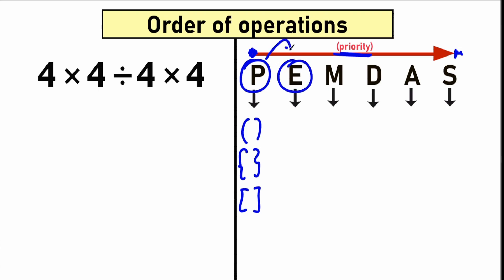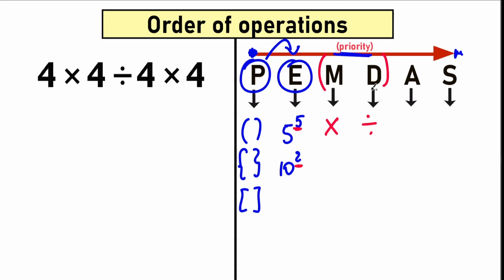After parentheses we move to the next step: exponents. These are basic powers — for example, 5 to the power 5, or 10 to the power 2. We need to raise numbers to their powers. The next thing is the multiplication and division group. M stands for multiplication and D stands for division. Why mention them together? Because this is one common group. A lot of students say multiplication comes before division in PEMDAS, so multiplication goes first — but it doesn't work like that. Multiplication and division have the same priority.